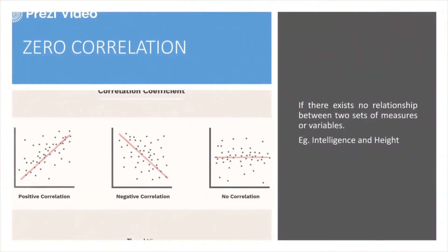Zero correlation, as the term and graph indicate, means there exists no correlation between variable X and variable Y. Whatever changes you make to X, it is not going to impact Y and vice versa. There exists practically no relationship between the two sets of variables. The classical example is intelligence and height — no matter how intelligent a person is, you can never correlate that with the height of the person.